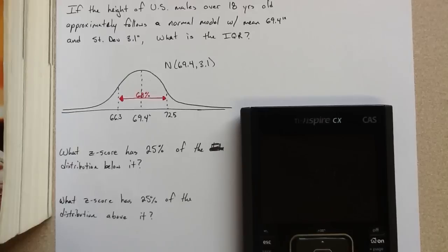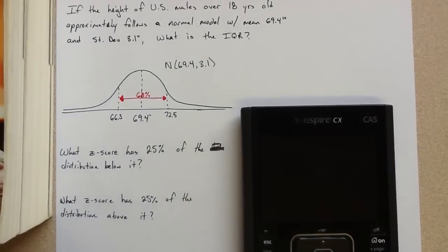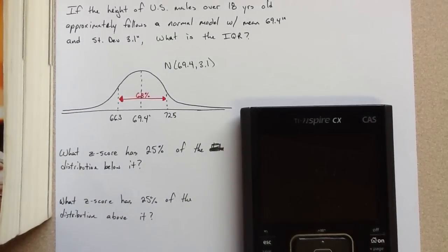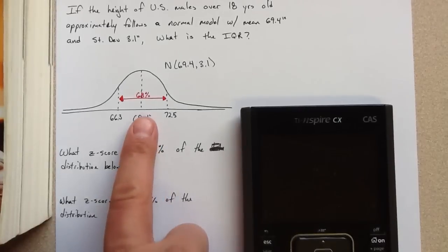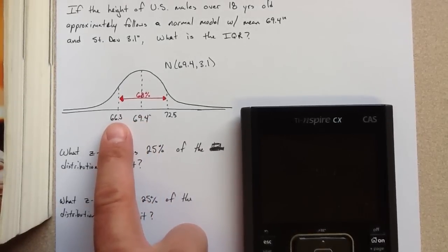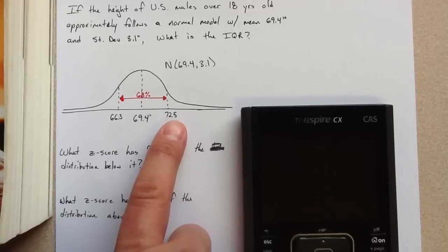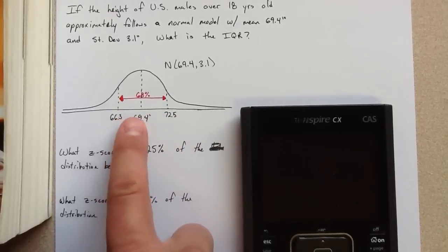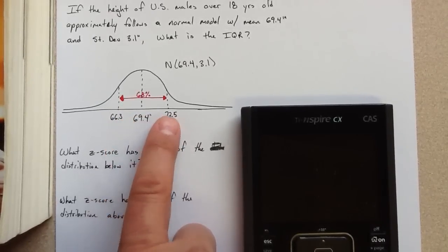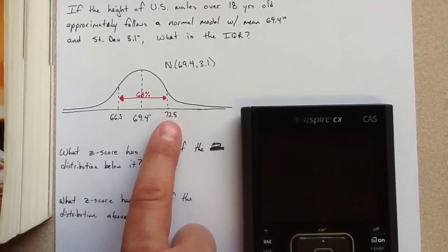Alright, so what we ought to know about normal models is the empirical rule, or the 68-95-99.7 rule, which would say that 68% of the distribution for a normal model falls within one standard deviation of the mean. So one standard deviation below the mean is 66.3, and one standard deviation above the mean is 72.5. So 68% of U.S. males heights should approximately fall between 66.3 inches and 72.5 inches.